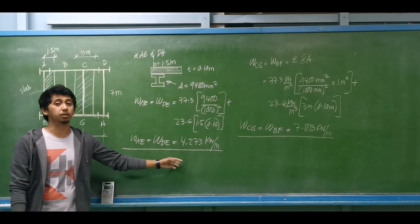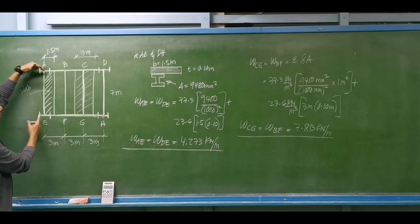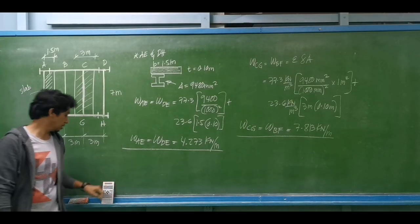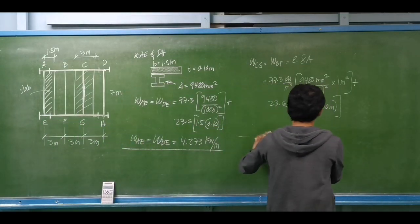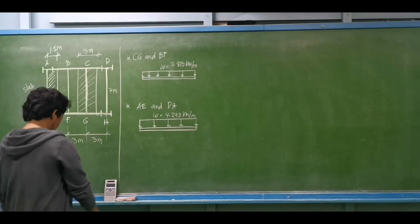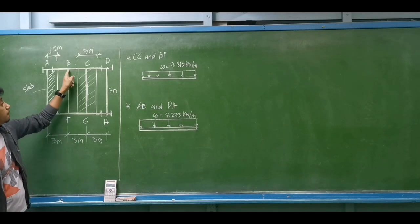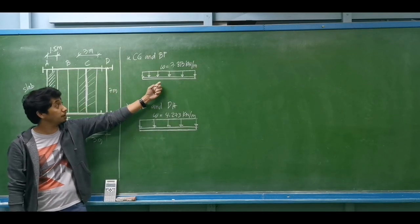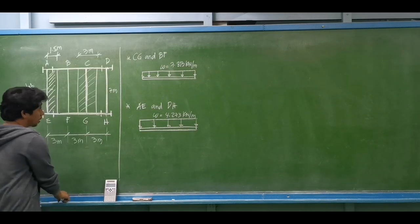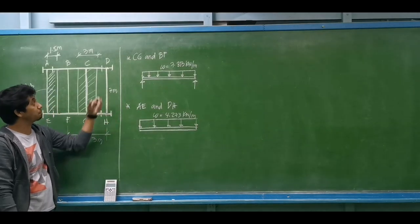We need to transfer this loading to the girders. The loads carried by these beams will be transmitted to girders AD and EH. Let's do the free body diagram for both beams. For member CG and member BF, the uniform load is 7.813 kN/m. For the extreme beams AE and DH, the uniform load is 4.273 kN/m.